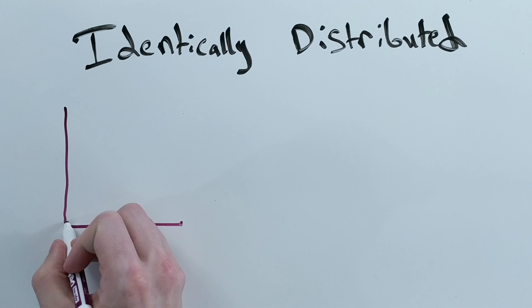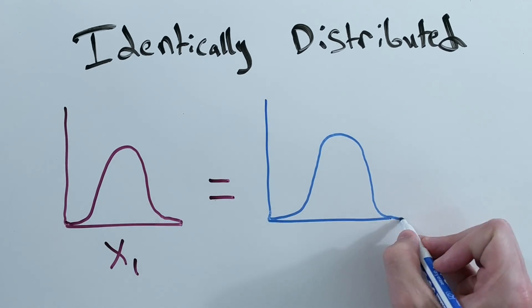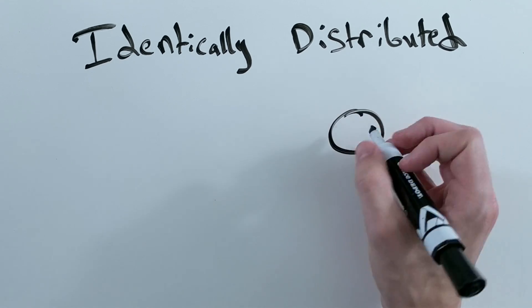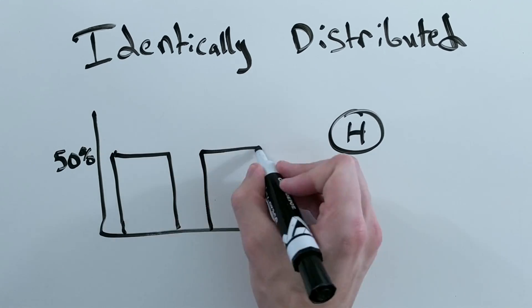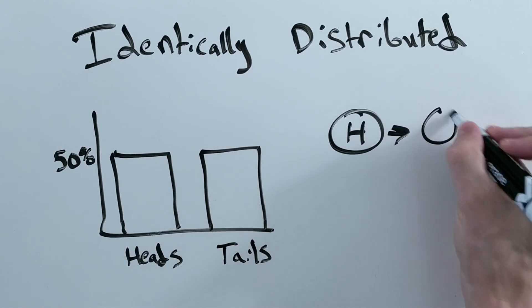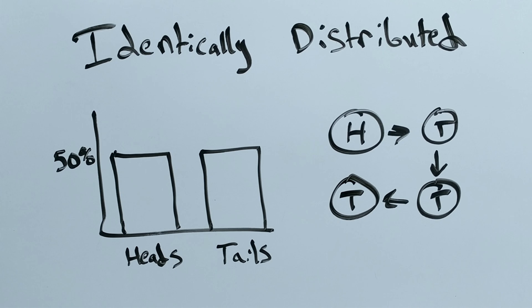Identically distributed means that the probability of any specific outcome is the same. For example, every time you flip a coin, you have a 50-50 chance of getting heads or tails. That value doesn't change every time you flip a coin.